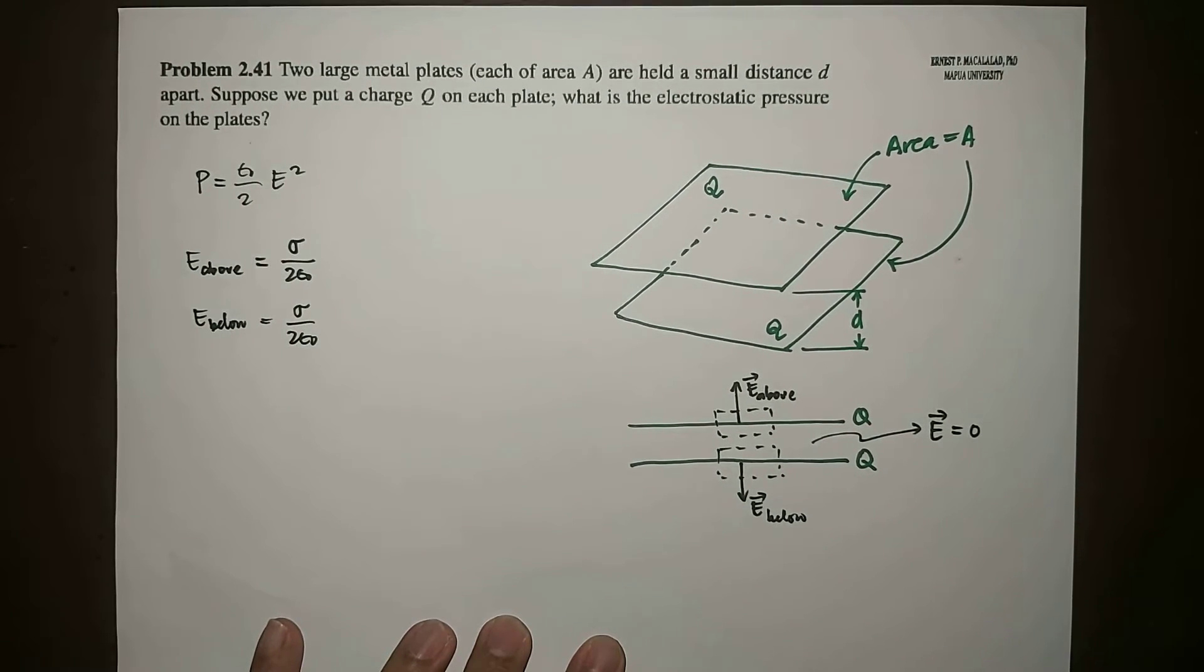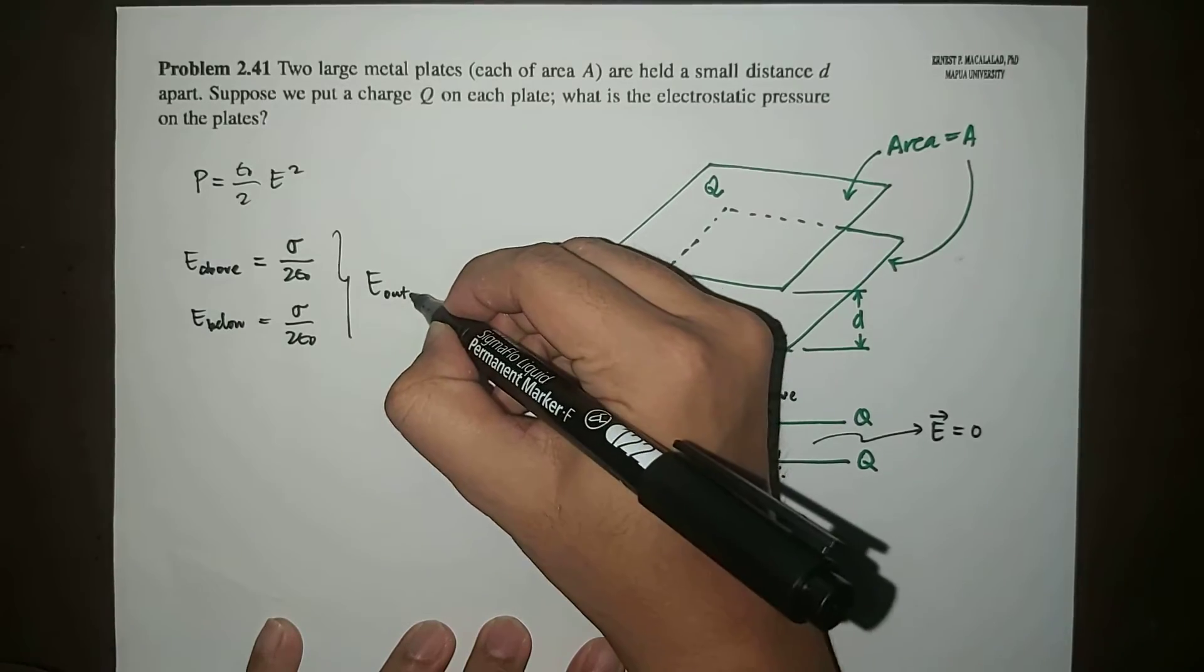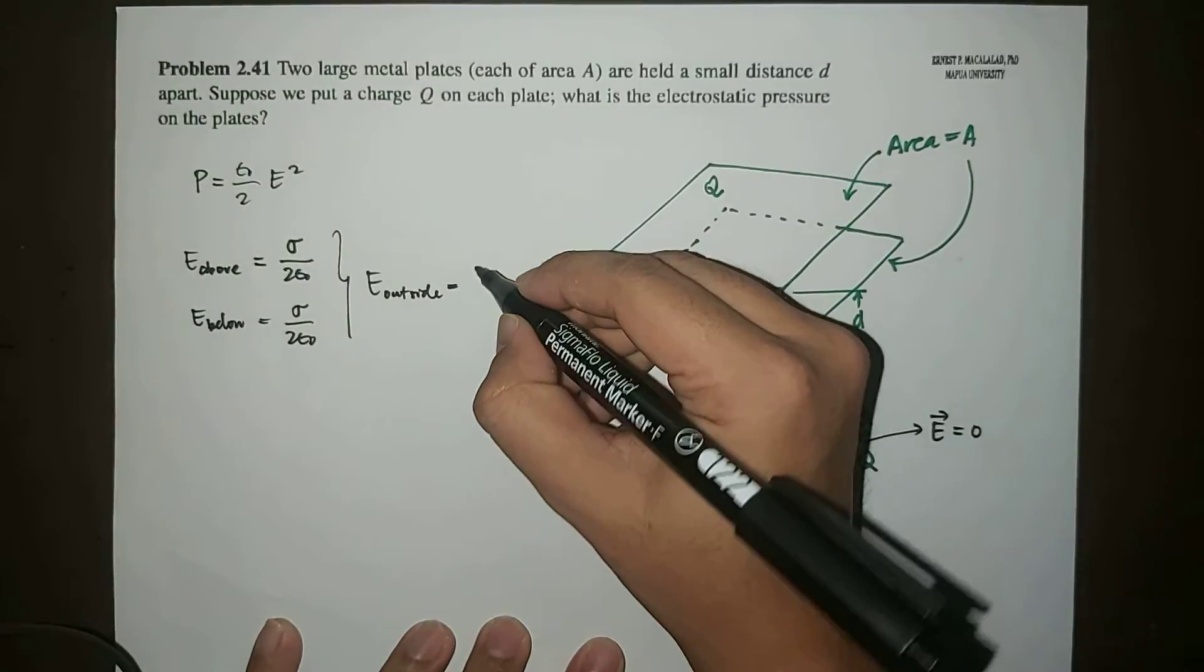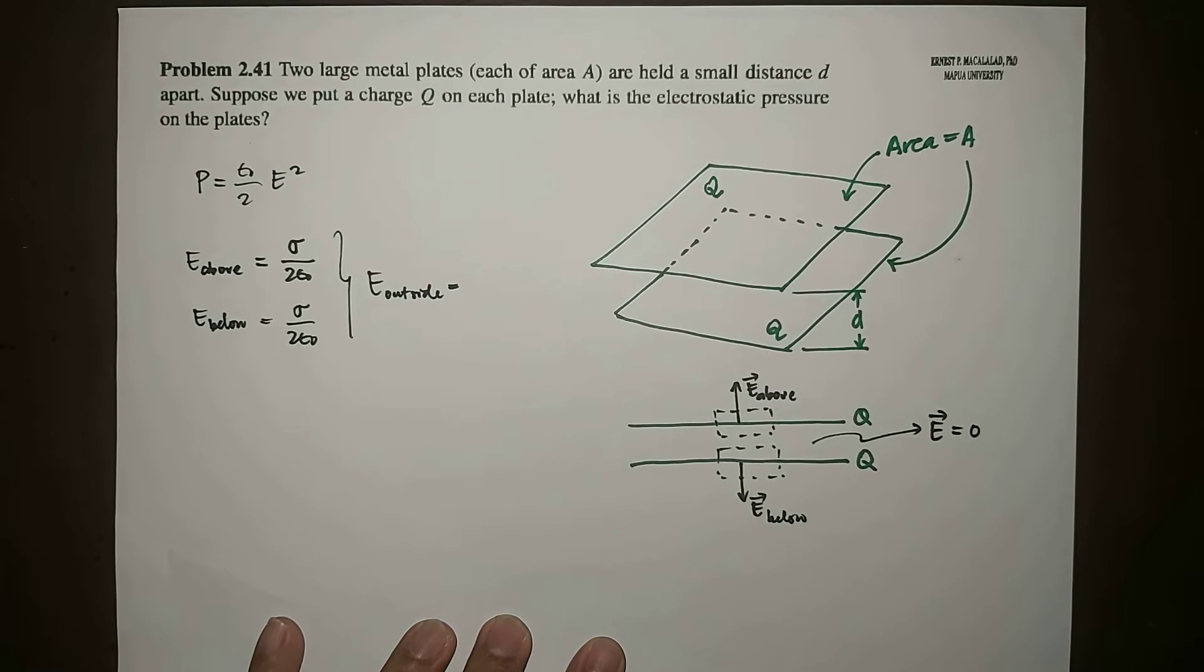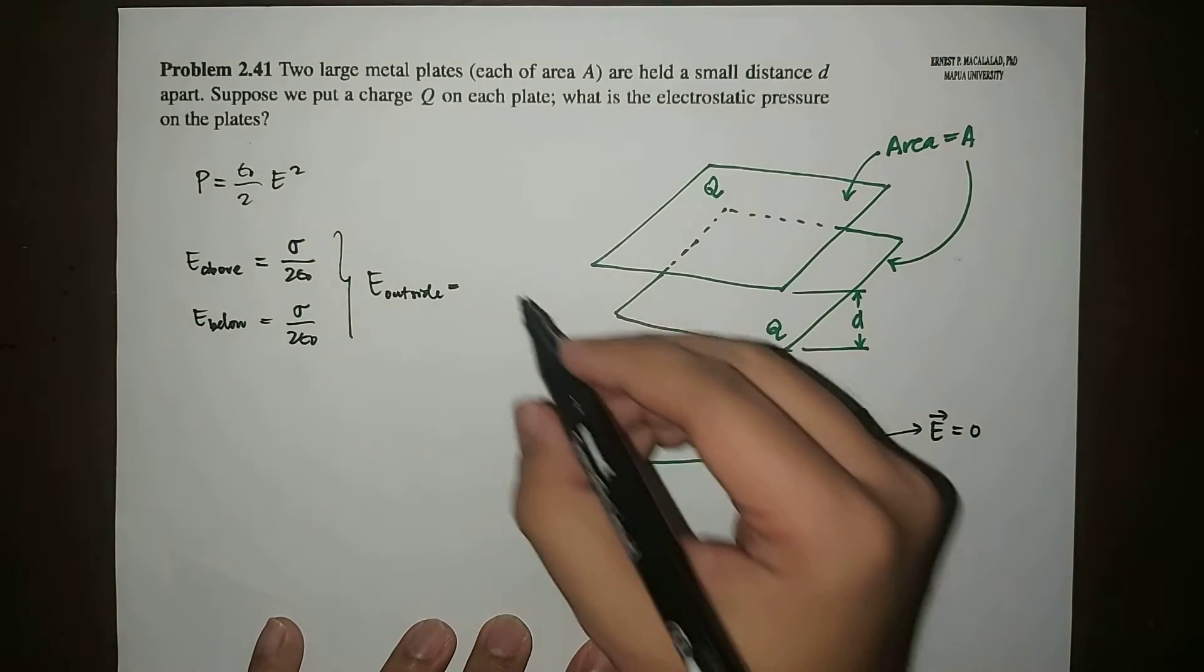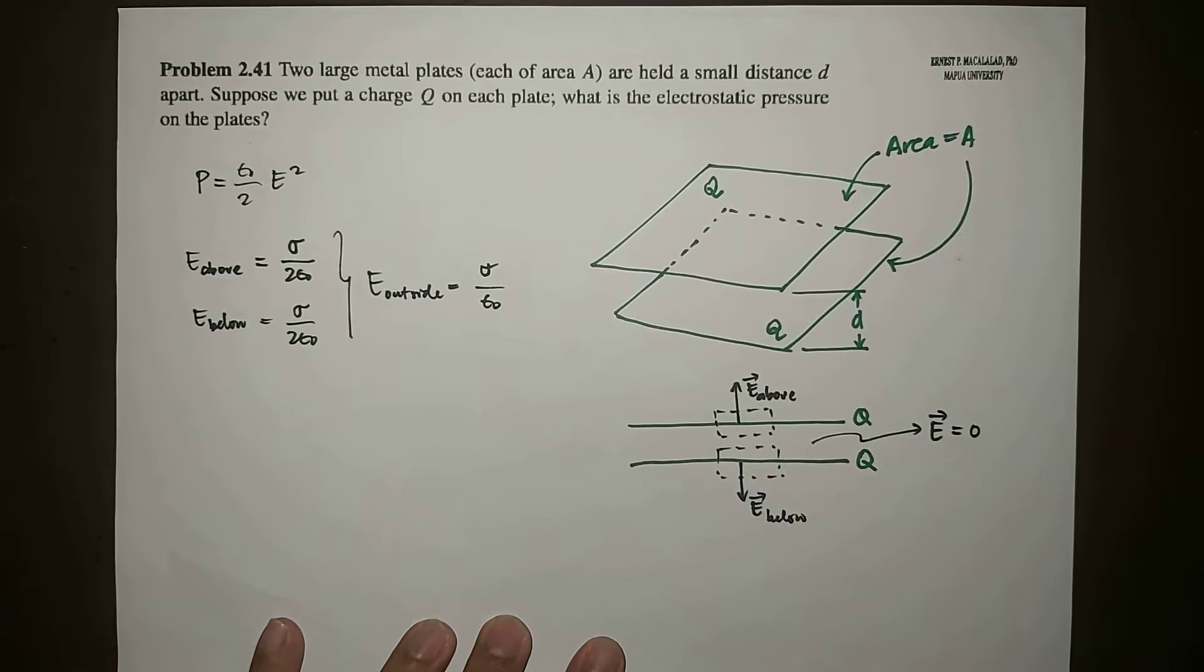So that means the electric field of the whole region, wherein there is only electric field outside, is just the addition of the two, which is sigma over epsilon naught.